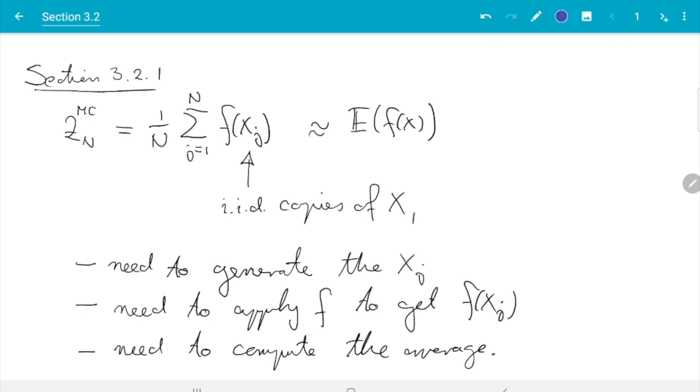The first topic, generating the X_J, we will cover in greater detail in chapter 1. For now, I just write chapter 1. The reason we can get away with this is that R has many built-in functions to generate random numbers. I showed you rnorm and runif in the last videos. There are many more, so for now we just use these functions.